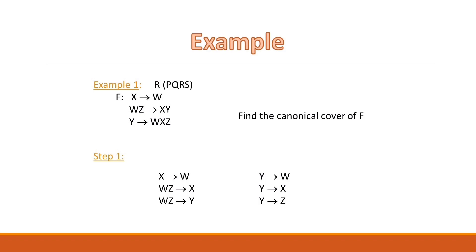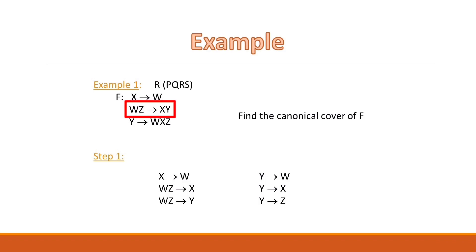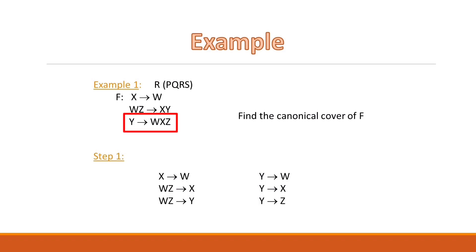Our first step was to apply the decomposition rule on the right-hand side of each of the FDs. Our first FD is X to W — W is a single attribute, so this functional dependency remains as it is. The second functional dependency is WZ to XY, which we decompose into WZ to X and WZ to Y. The third functional dependency is Y to WXZ, which we decompose into Y to W, Y to X, and Y to Z.